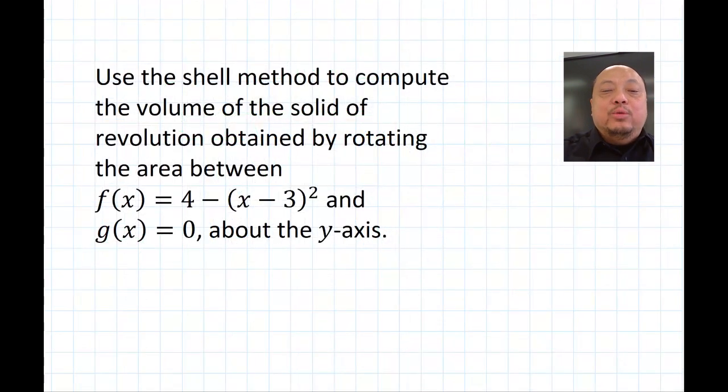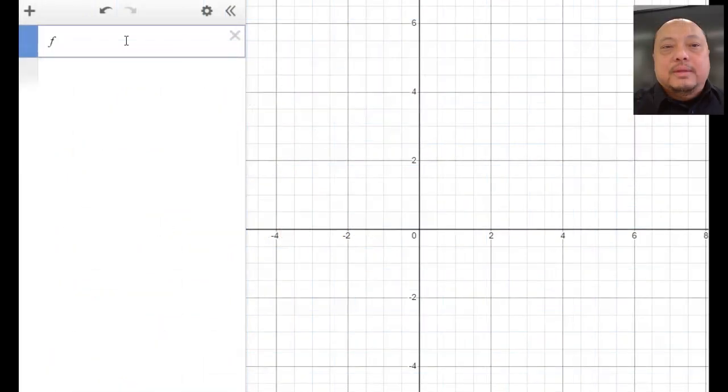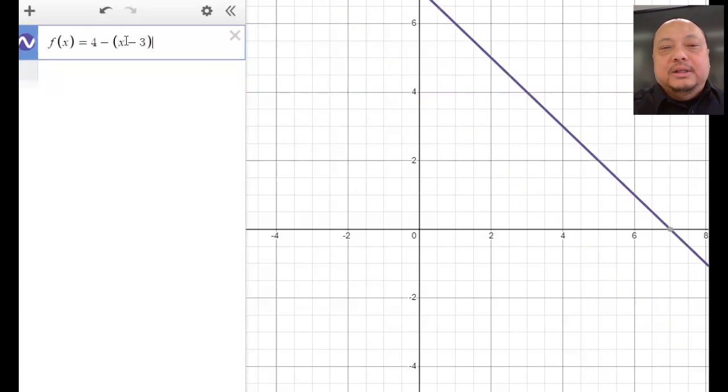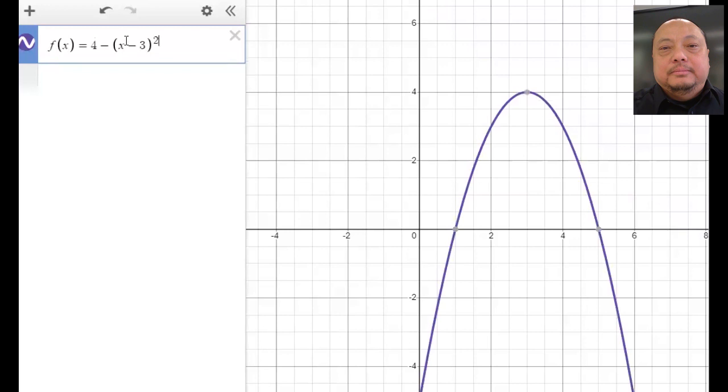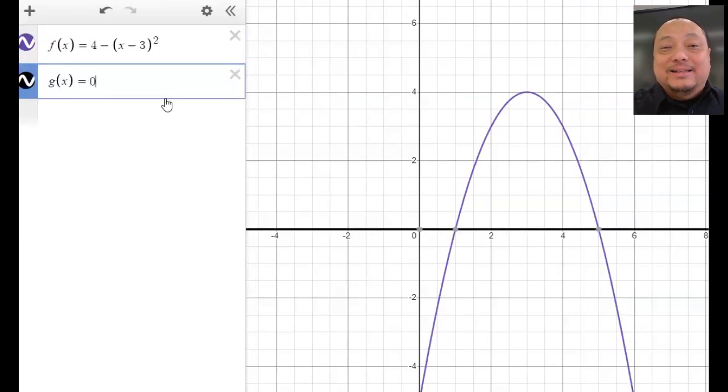Let's do it again with actual equations. Use the shell method to compute the volume of the solid revolution obtained by rotating the area between f(x) equals 4 minus (x minus 3) squared and g(x) equals 0 about the y-axis. Let's go on Desmos to draw the graphs. Here's f(x) equals 4 minus (x minus 3) squared. It's an upside down parabola. Here's g(x) equals 0. It's the same as the x-axis.